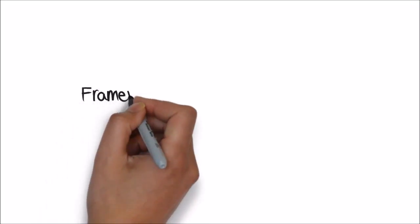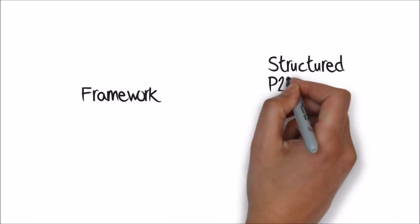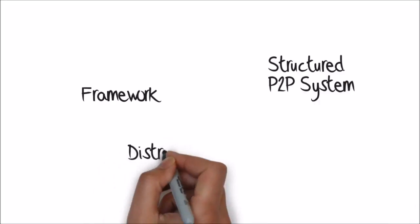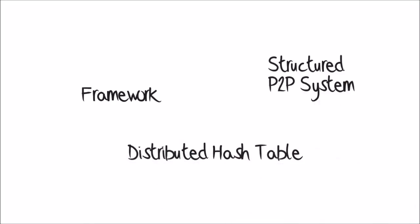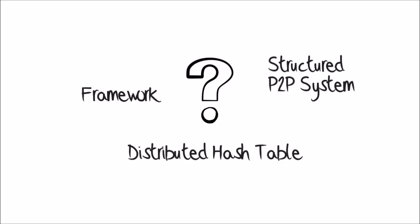TomP2P is a framework for structured peer-to-peer systems like distributed hash tables. But what exactly does this framework do? And what is a distributed hash table?